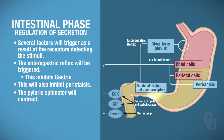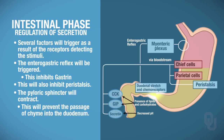The pyloric sphincter is actually going to contract. When it contracts, that's a good thing because no further chyme can actually enter into the duodenum. So at some point you cut off this area so that the chyme can no longer enter into the duodenum.